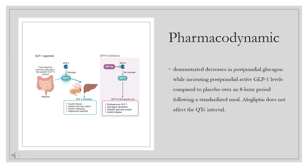Pharmacodynamics: Peak inhibition of DPP-4 occurs within 2–3 hours after a single-dose administration to healthy subjects. The peak inhibition of DPP-4 exceeded 93% across doses of 12.5 mg to 800 mg. Inhibition of DPP-4 remained above 80% at 24 hours for doses greater than or equal to 25 mg.